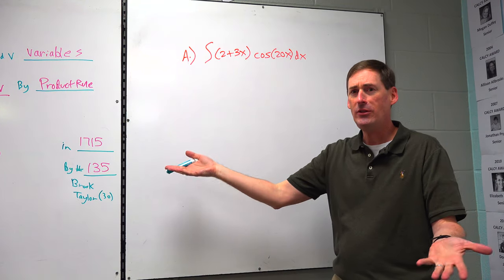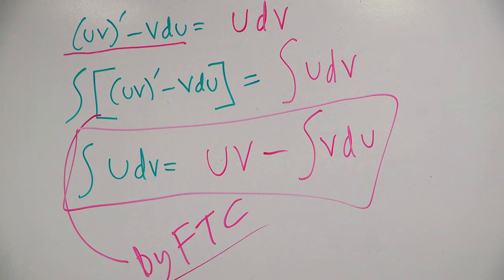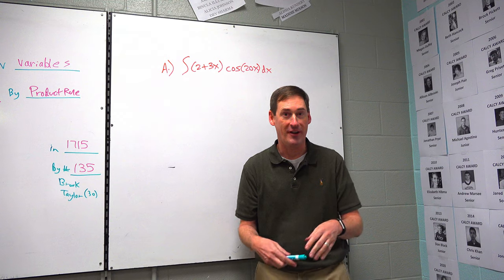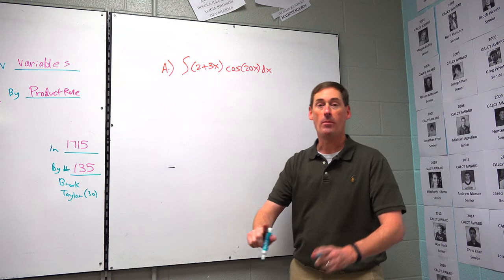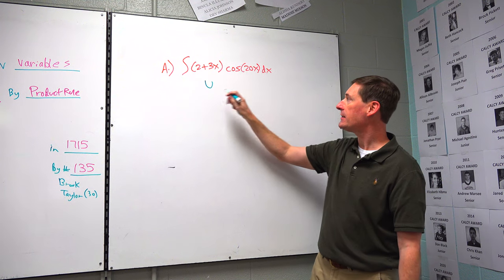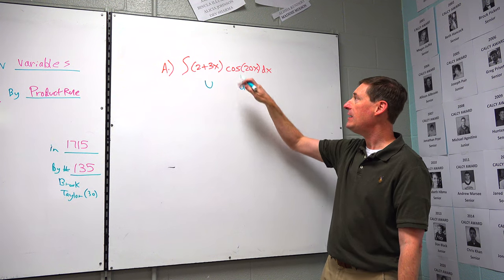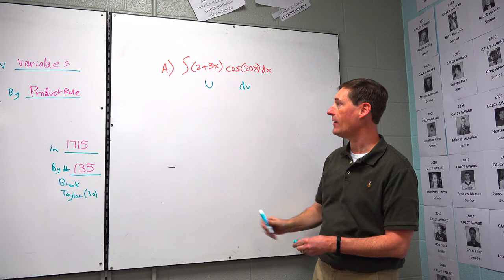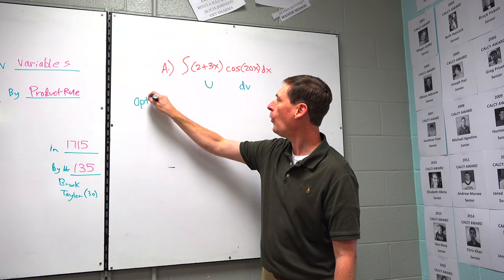So how do we even use that formula? You see that we have the integration of u·dv. One term is going to be u — like the old u-substitution — and one term is going to be dv. Let's try both options and see if we can sort this stuff out. Option number one: we could let u be 2 plus 3x, and we could let dv be cosine of 20x.